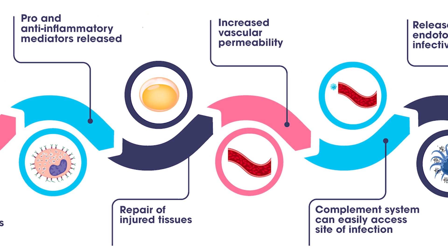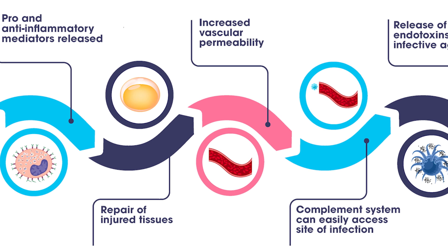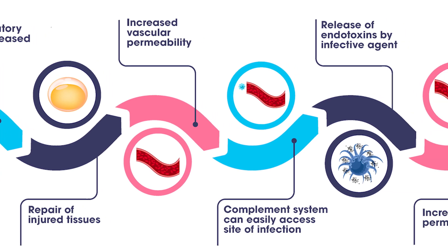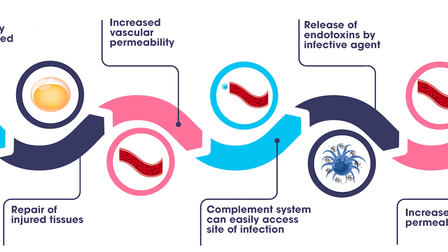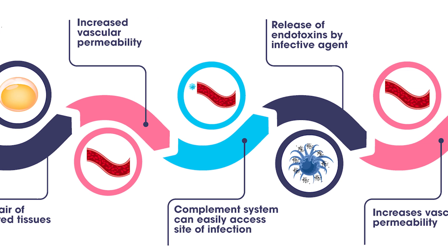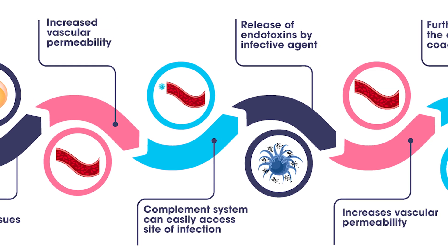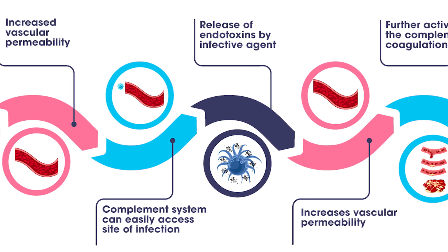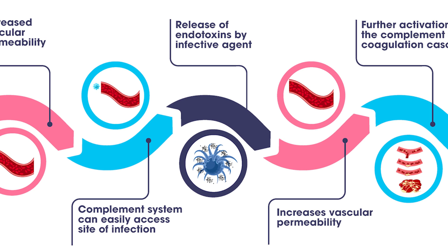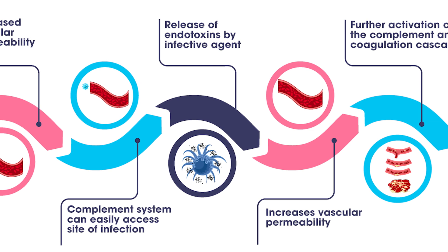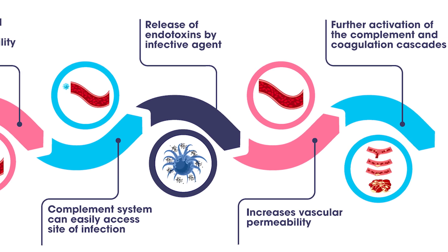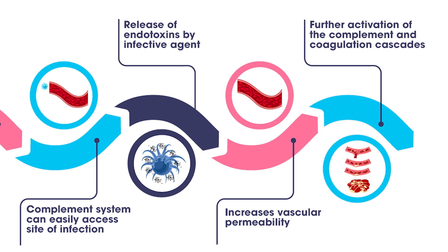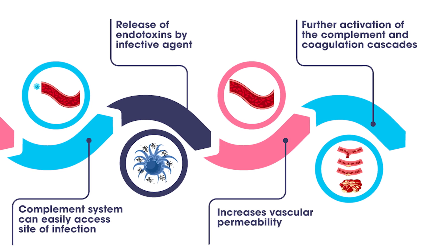The immune response increases vascular permeability so that the complement system, involved in destruction of the infective agent, can easily access the site of infection. Endotoxins released by the infective agent increase vascular permeability further by activating the complement and coagulation cascades.